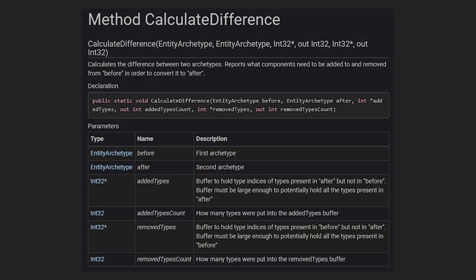I'll go into more detail on what chunk capacity and chunk count mean in my upcoming video on chunks. There's also a useful method that calculates the difference between two archetypes — you can say: I have this archetype and this archetype, what components do I need to add to one to make it the same as the other? There may be some handy situations where that comes in useful.